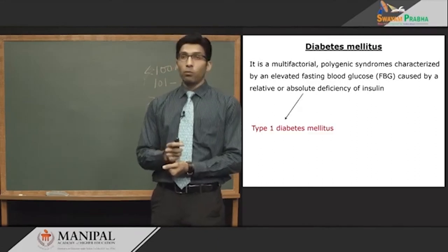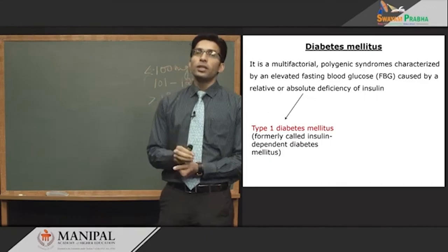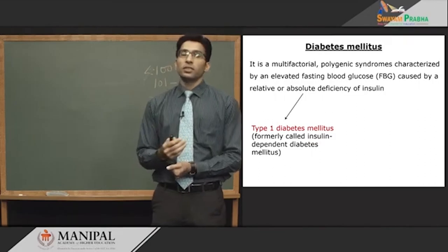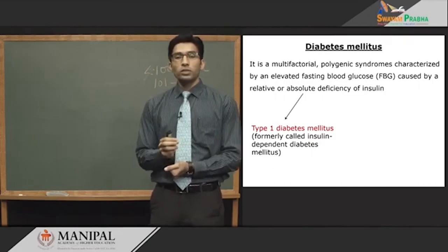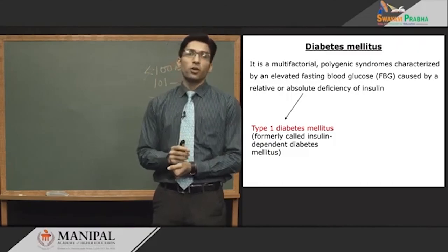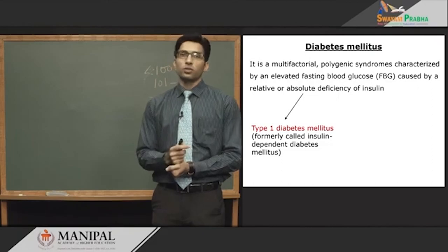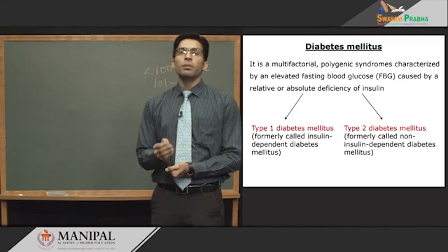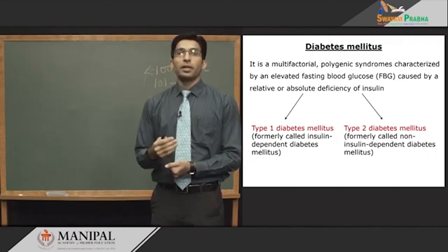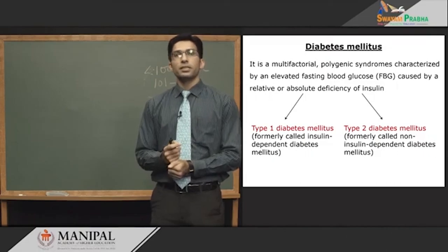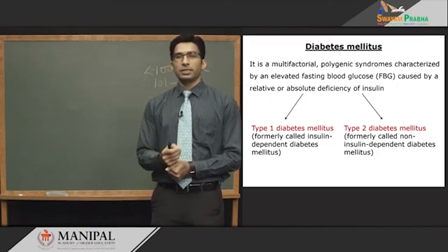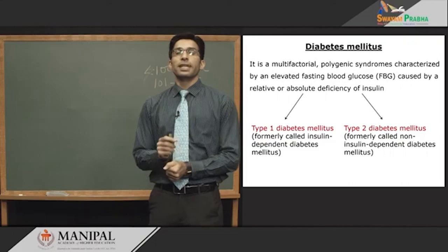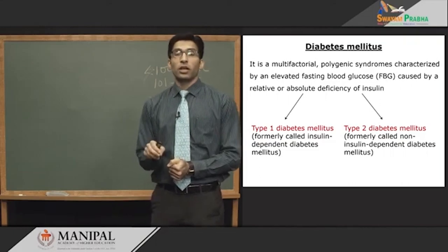Based on this definition, there are two types of diabetes. Type 1 diabetes, formerly called insulin-dependent diabetes, has an early onset and is also called juvenile diabetes. Its cause is autoimmune destruction of beta cells of the pancreas. Type 2 diabetes, formerly called non-insulin-dependent diabetes mellitus — though this term is no longer applicable because at later stages of type 2 diabetes, insulin is needed.